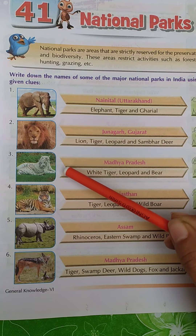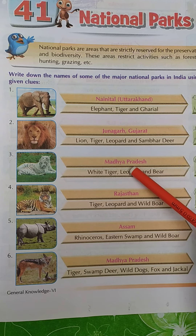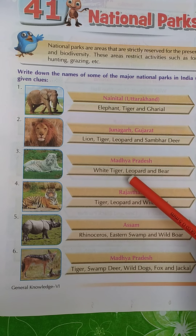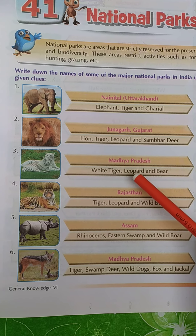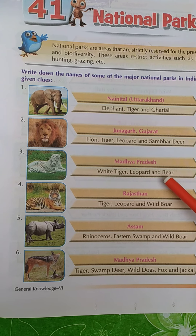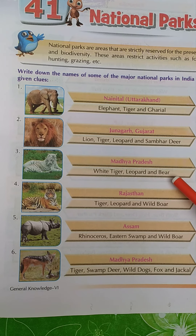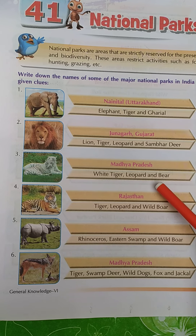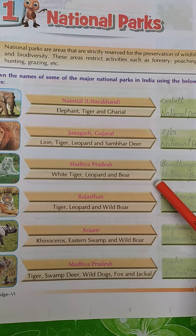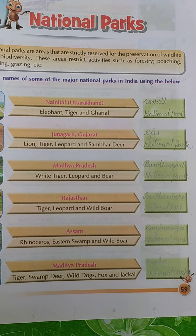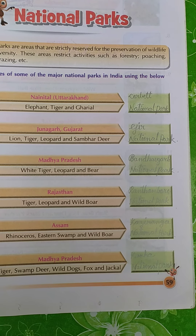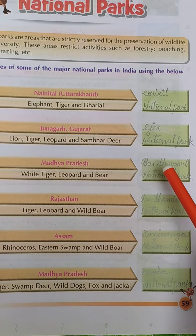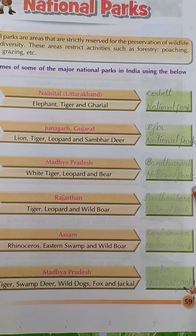Number three. This park is in Madhya Pradesh. The main animals are white tiger, leopard, and bear. The name of this park is Bandhavgarh National Park.